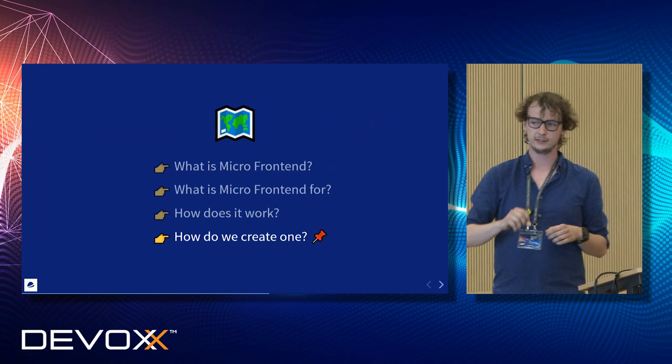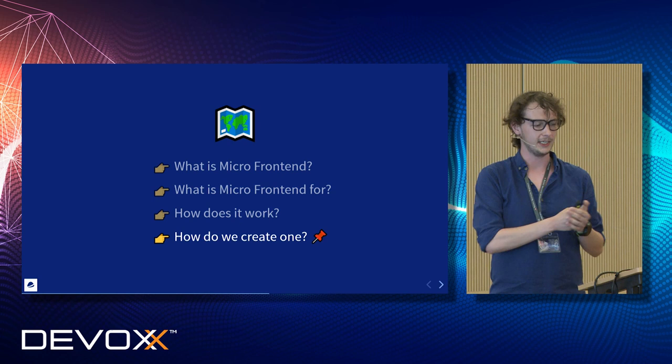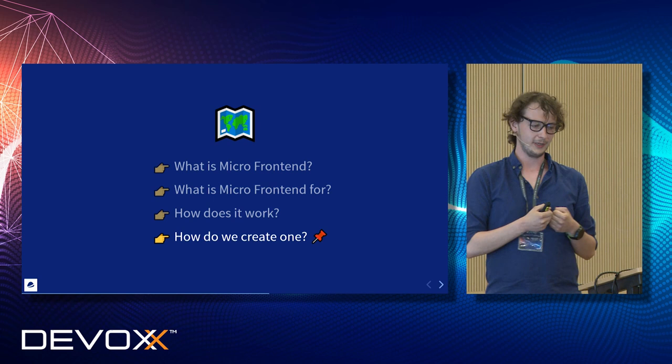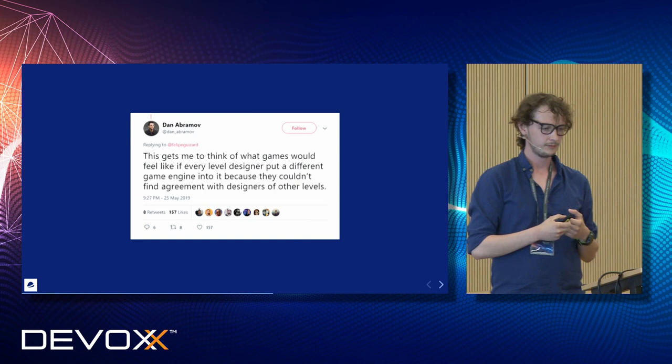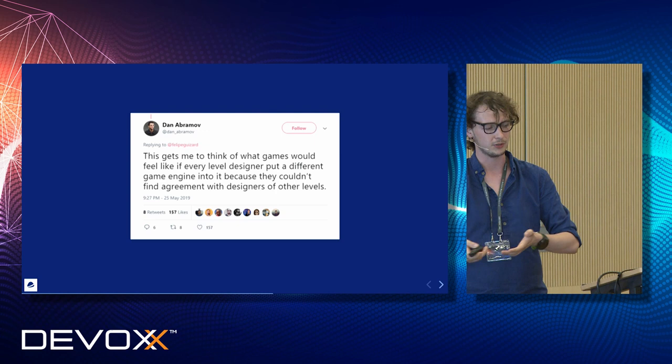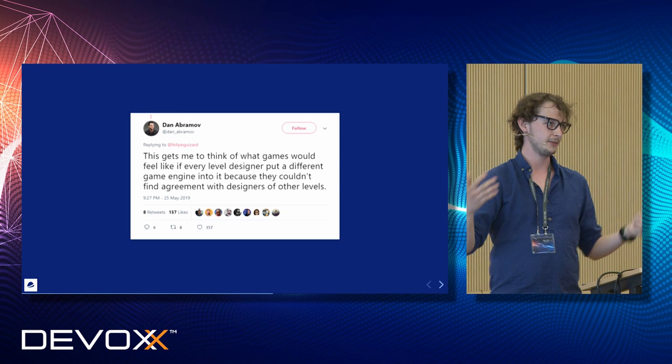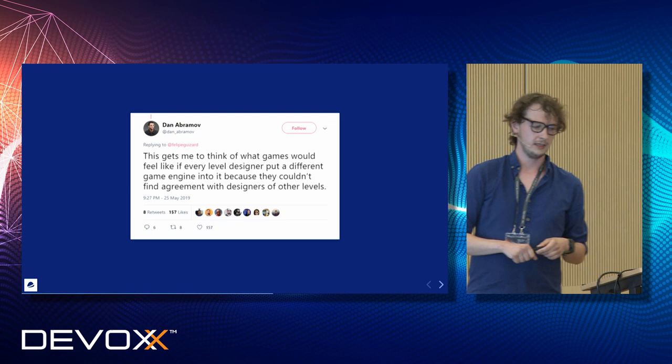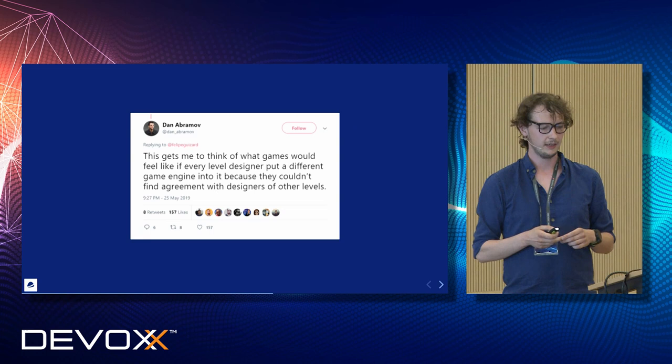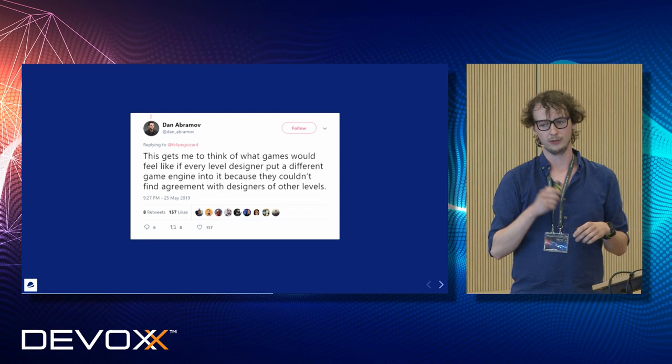So this is how it works in general — how the page is composed and how different elements communicate with each other. Let's now take a look at how it looks from a developer's perspective — how do developers create micro-frontends in our world? As I mentioned before, the main problem with this approach comes from the main feature of this approach. Autonomy of development teams can cause fragmentation of development and of the application itself. Dan Abramov correctly points this out in the Twitter thread I'm referring to, with his analogy to game development.